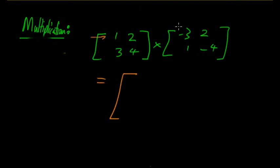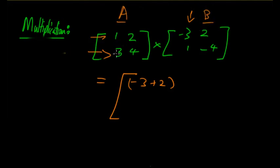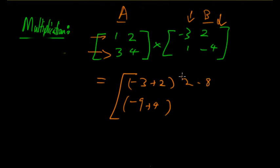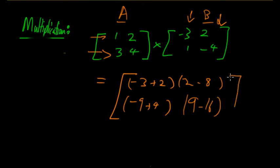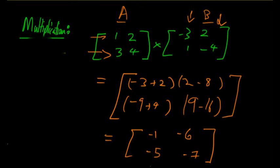Working through the 2×2 multiplication: the first row of A times the first column of B gives -3 + 2 = -1. The second row of A times the first column gives -9 + 4 = -5. For the second column of B, the first row of A times the second column gives 2 - 8 = -6, and the second row times the second column gives 9 - 16 = -7. So the final result is [-1, -6; -5, -7].